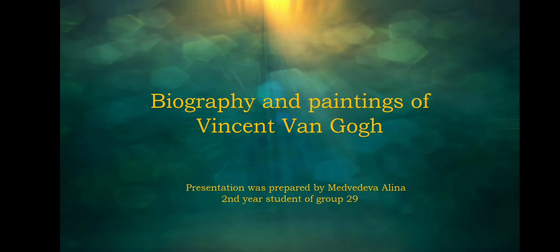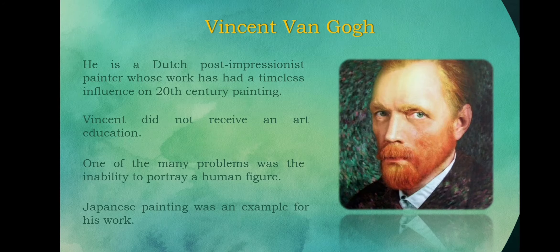Biography and paintings of Vincent van Gogh. Vincent van Gogh was born in 1853 in the Netherlands. He is a Dutch post-impressionist painter whose work has had a timeless influence on 20th century painting. In a little over 10 years he created more than 2,100 works, including about 860 oil paintings.